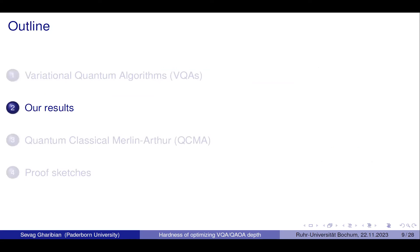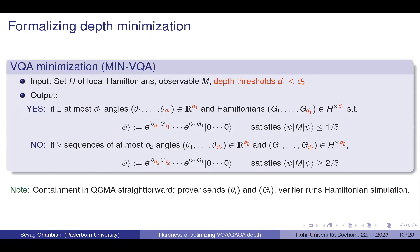Let me state our results. First, I need to define the optimization problem. We're talking about VQA: I have a set of local Hamiltonians H — my rotation axes — some measurement M, and two depth thresholds to decide between. In the yes case, I promise there's a low-depth ansatz — only D1 alternations needed — and the prepared state has good measurement statistics. In the no case, I promise that to get any good measurement statistics, you really need a very deep circuit, even if you use up to D2 depth.